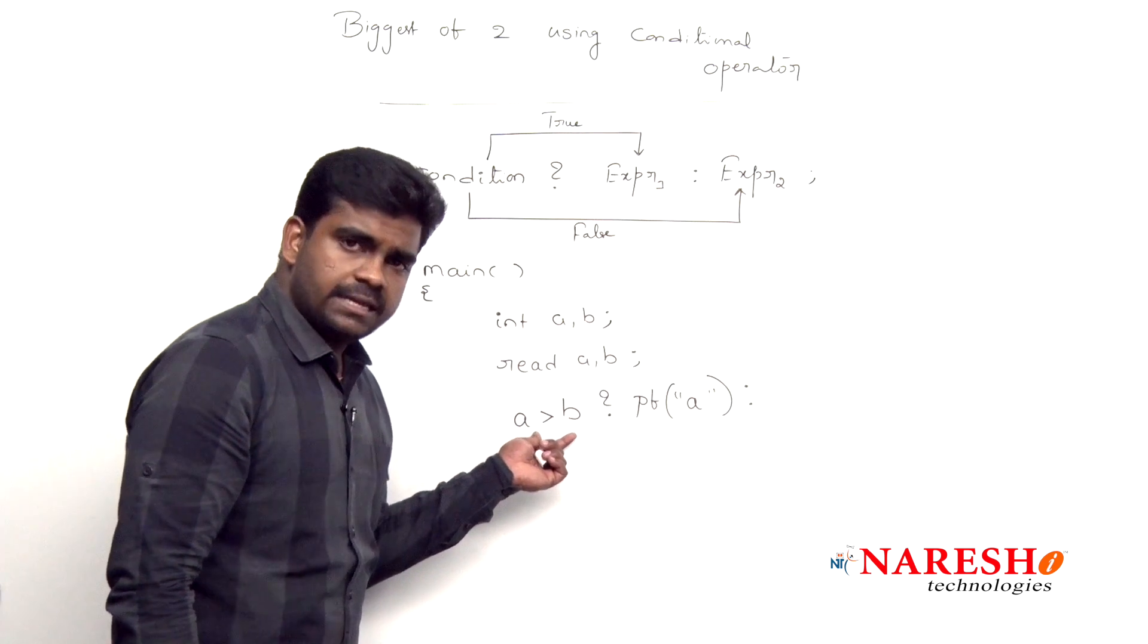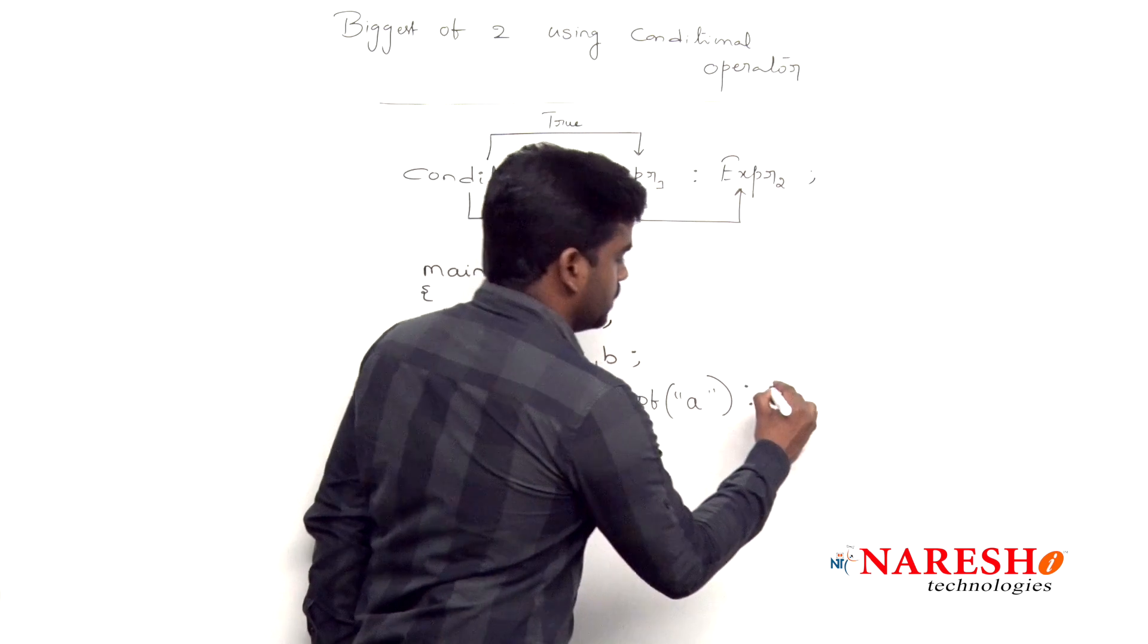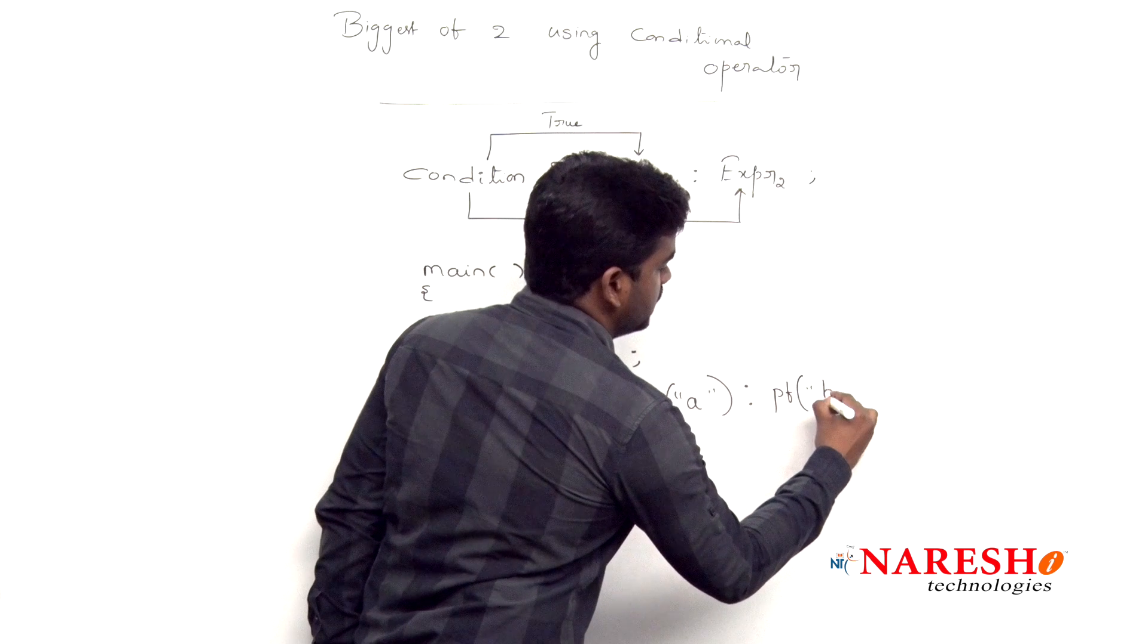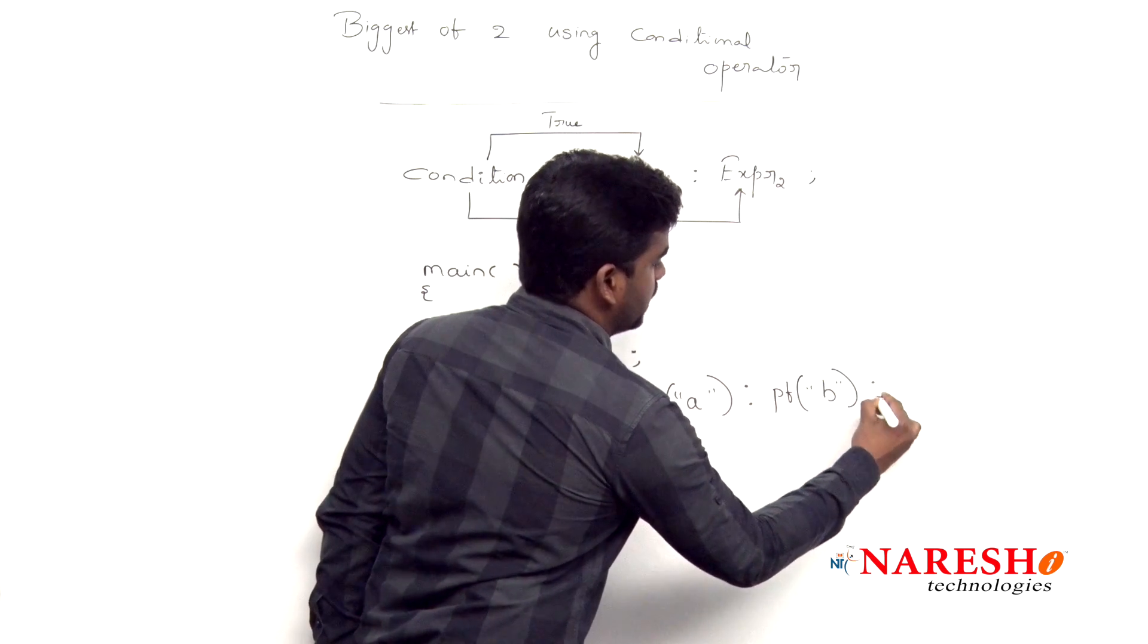And suppose if the condition has failed, then expression 2 gets executed, b is big, like this we are writing. Now how it will execute?